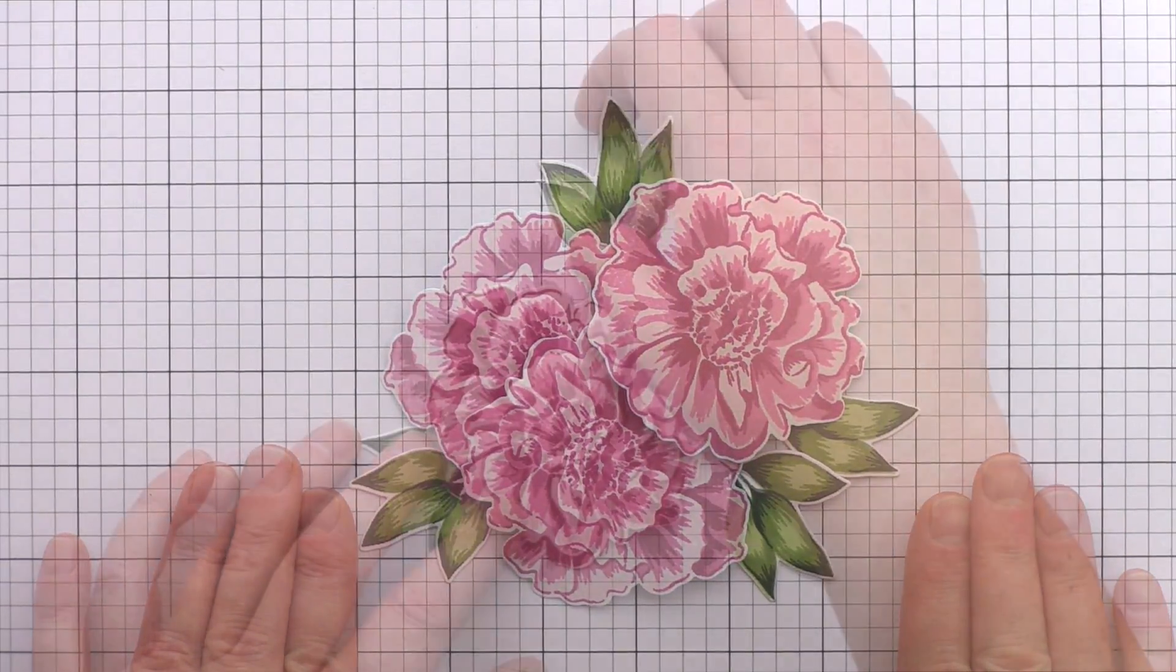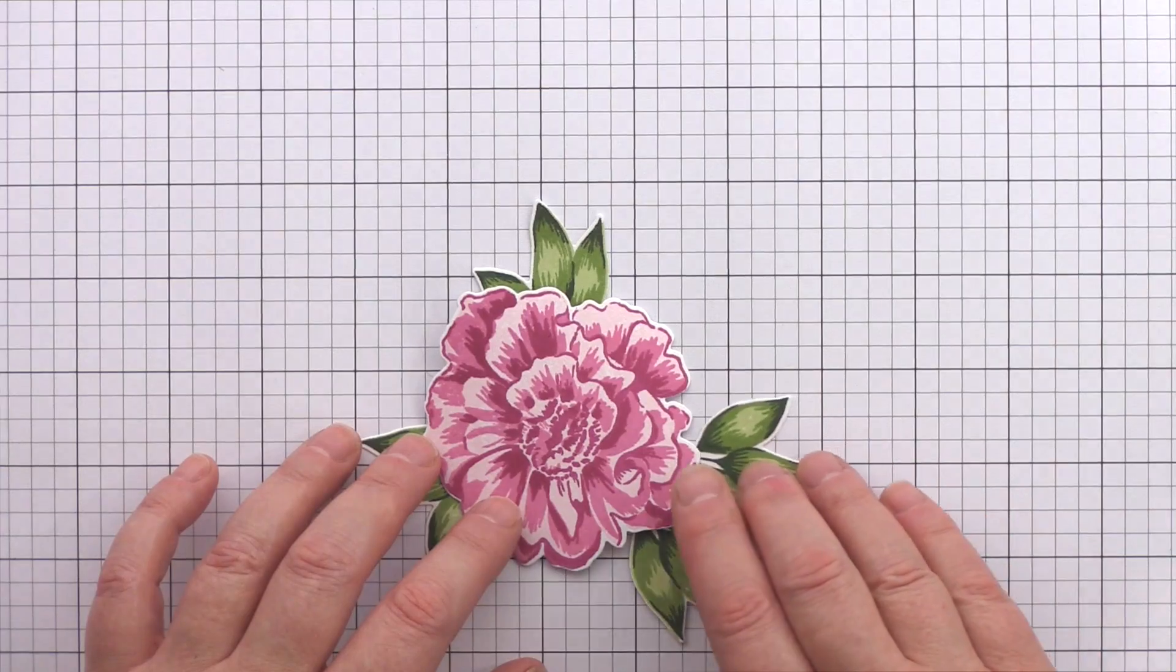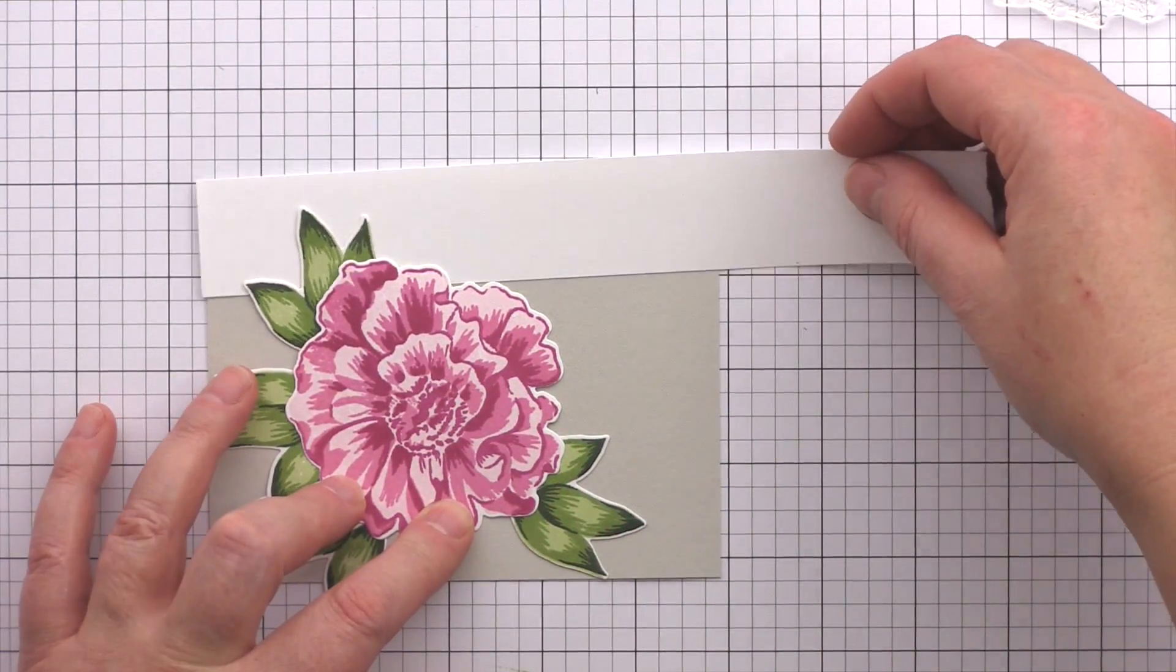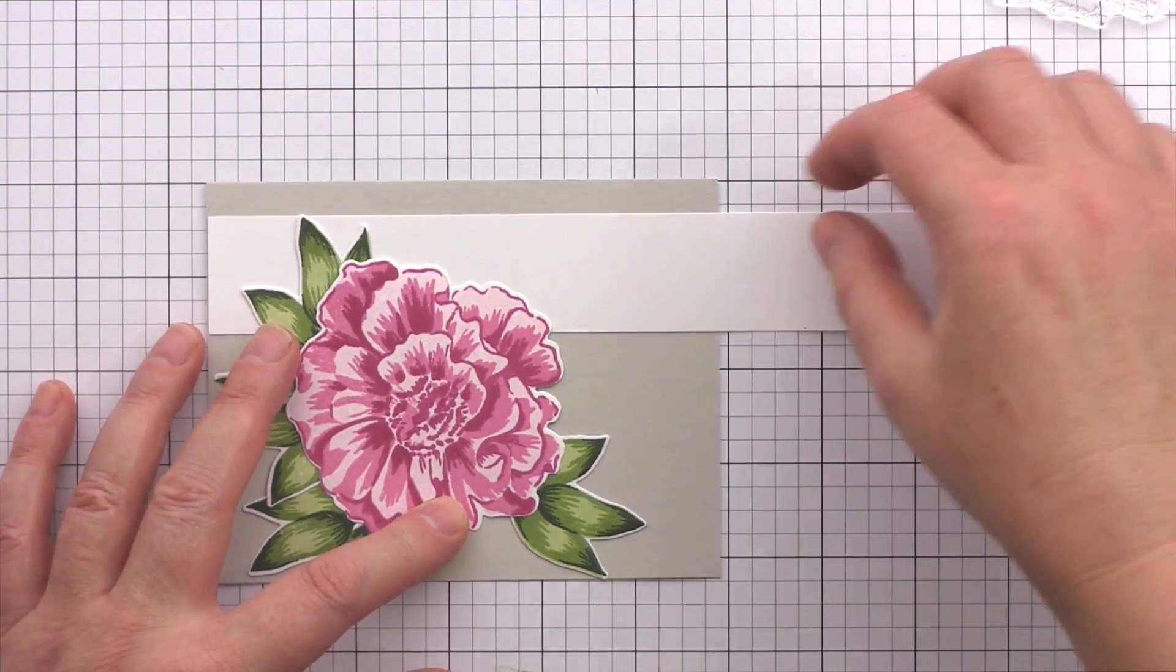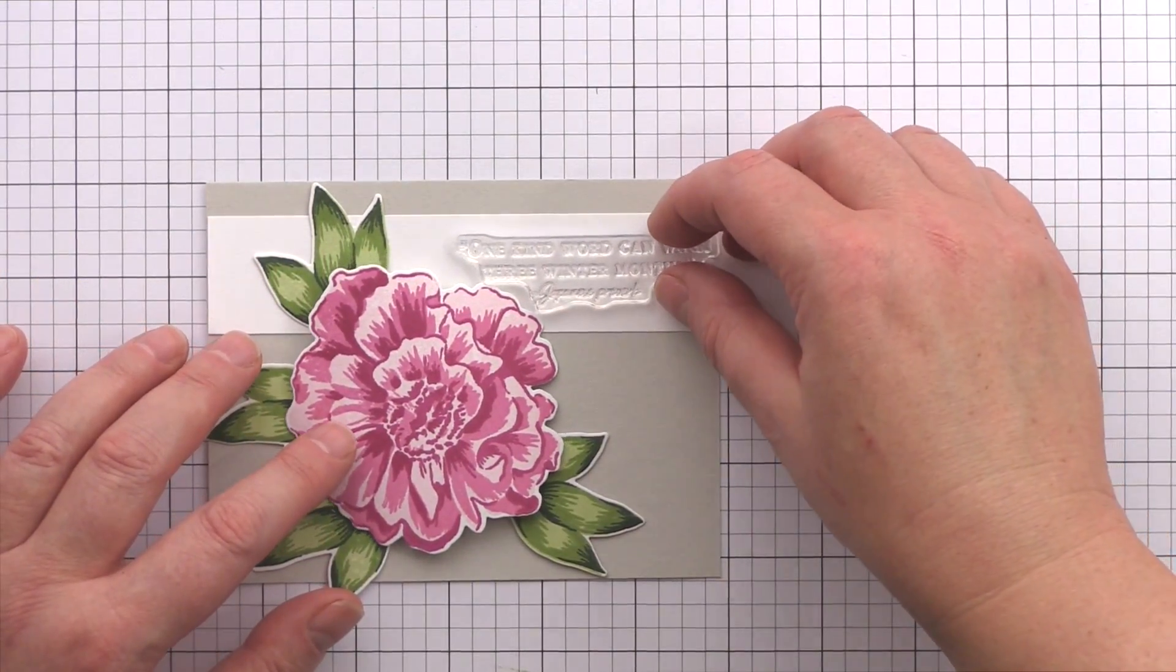This would be great for a larger project or scrapbook page but for my card I decided to let one of the large flowers take center stage. I've cut a panel of grey card as a nice neutral background and I thought I'd break things up a bit by stamping one of the sentiments from the set on a strip of white card.